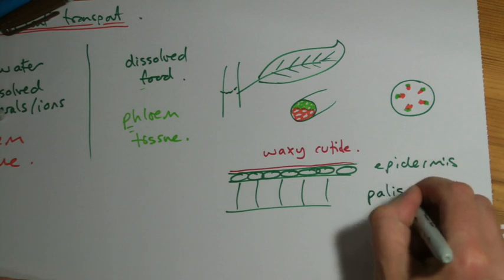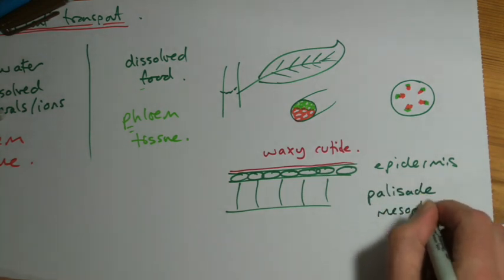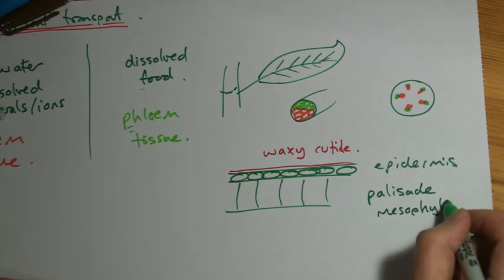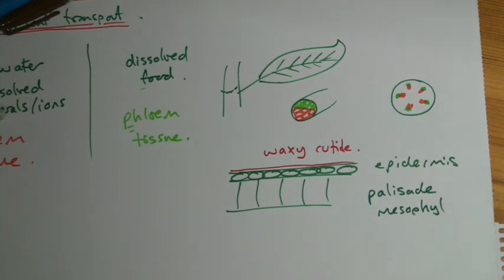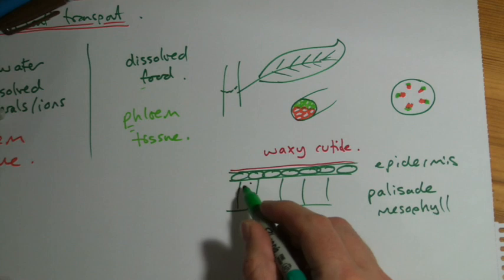Underneath that we have a palisade layer, also sometimes known and certainly in the books referred to as palisade mesophyll. I'm not convinced you necessarily need to put that in as mesophyll every time, but that's what they use in the book. I think palisade will be fine.